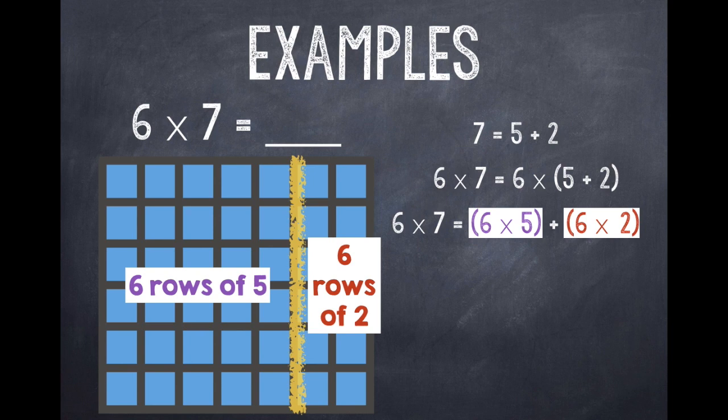So I'll start by multiplying 6 × 5. And I can skip count by 5's: 5, 10, 15, 20, 25, 30. And then I can multiply 6 × 2. And this time I can skip count by 2's: 2, 4, 6, 8, 10, 12.